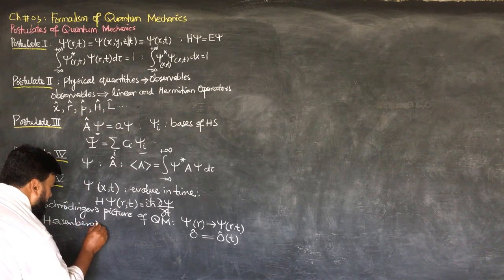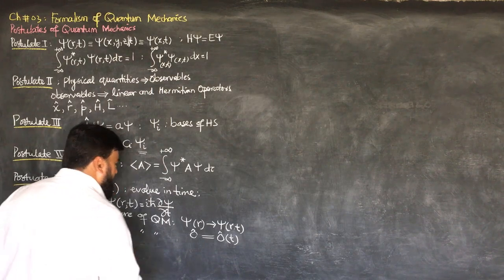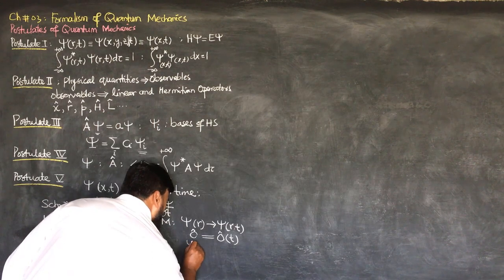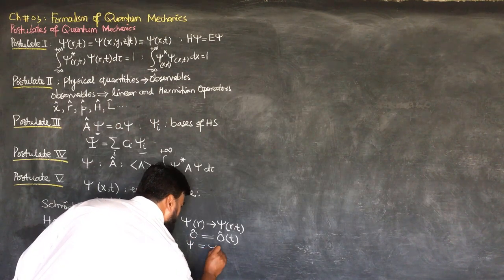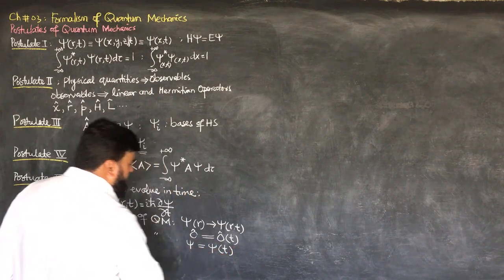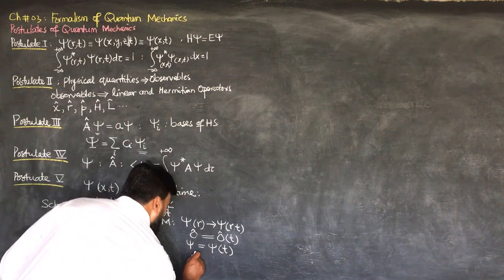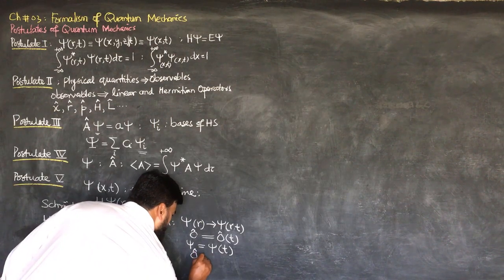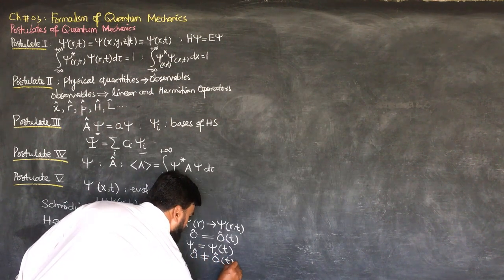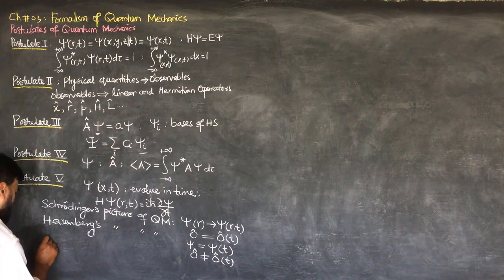The Heisenberg picture of quantum mechanics states that the wave function will remain static in time, meaning psi at time t0 and psi at time t will remain the same, while the operator will not remain the same in time — the operator will evolve in time.